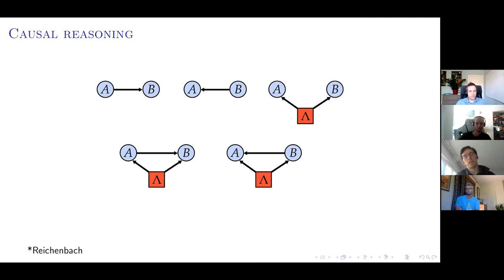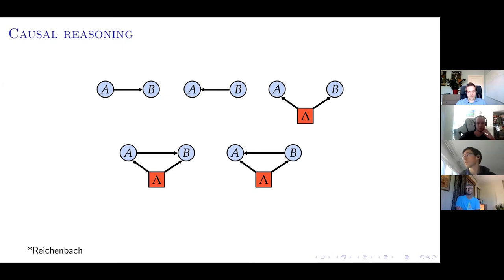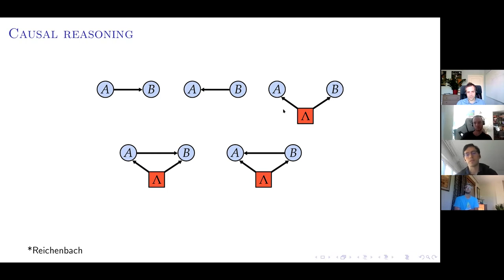The central idea of causal reasoning appears when we look at correlated variables A and B and try to give some explanation for those correlations. These ideas date back to Reichenbach, who formalized the principle: if you see correlations between two variables A and B, there must be one of three explanations — either A has a direct causal influence on B, B has a direct causal influence on A, or there must exist some hidden variable creating the correlations between A and B.